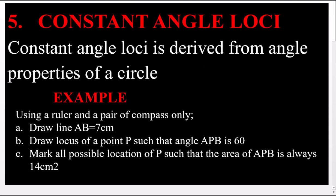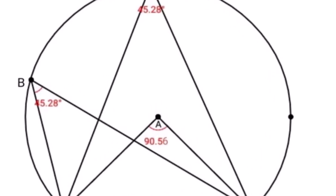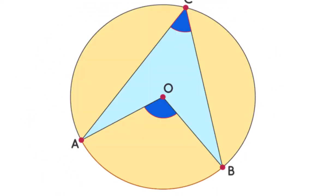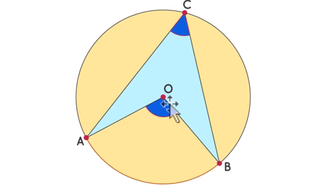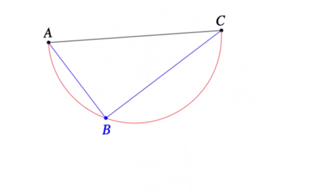First, let's review some key angle properties of a circle. Angles subtended by the same chord at the circumference in the same segment are equal. The angle subtended by the same chord at the center is twice the angle subtended at the circumference. The angle subtended by the diameter on the circumference is always 90 degrees.